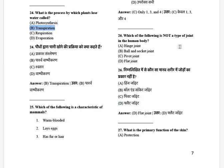Which of the following is a type of joint in the human body? The options are: hinge joint, ball and socket joint, pivot joint, and flat joint. The answer is flat joint (as the 'other' type mentioned).